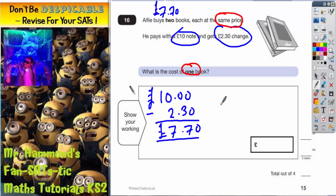Now, there are two ways of doing this. You could do a bus shelter division, so seven pounds seventy - to half it you're dividing by two. Okay, so twos into seven goes three with a remainder of one...